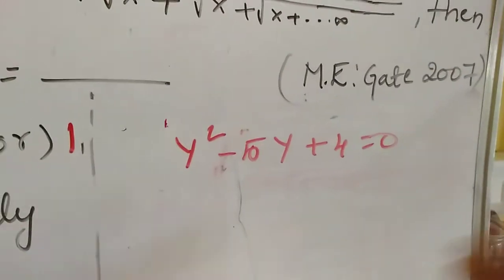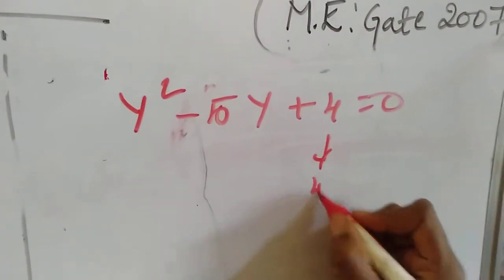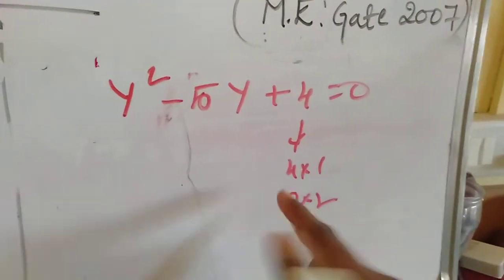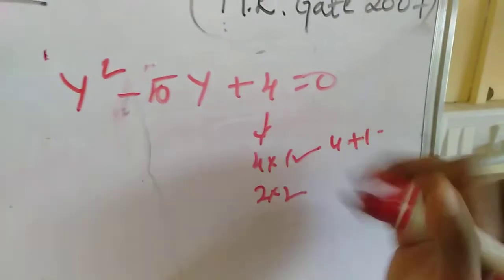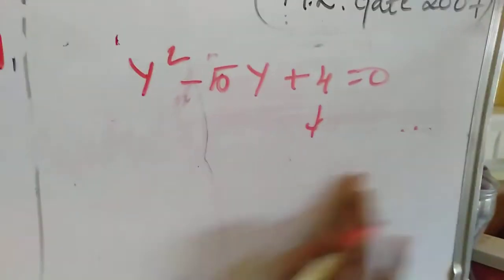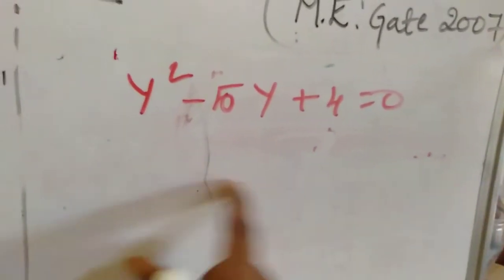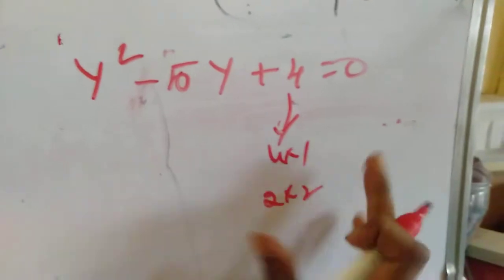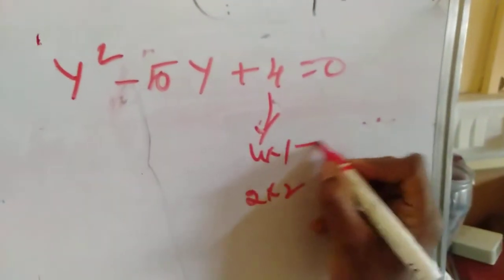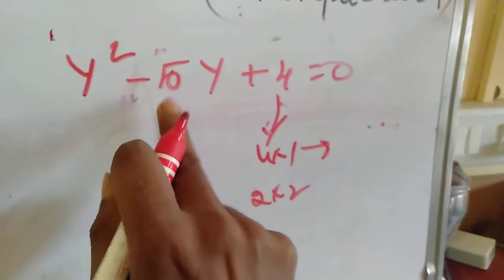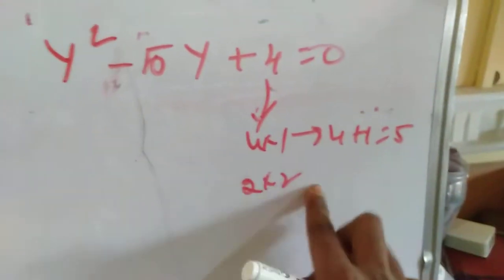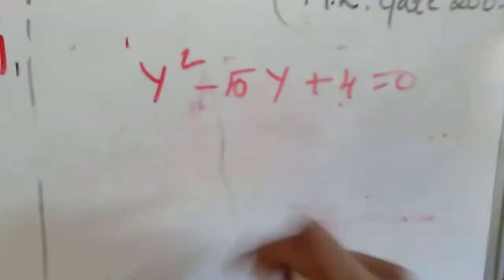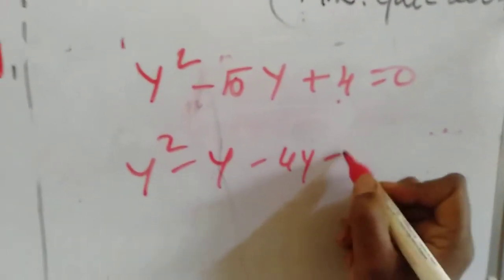Now we solve by factoring. The factors of 4 are 4 times 1 or 2 times 2. Since we need factors that add up to 5, we use 4 and 1, because 4 plus 1 equals 5. Therefore the factors of this equation give us roots of 4 and 1. Alternatively, solving directly: y squared minus 5y plus 4 equals 0 becomes y squared minus 4y minus y plus 4 equals 0.